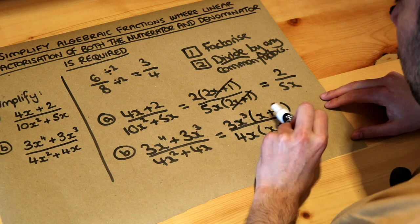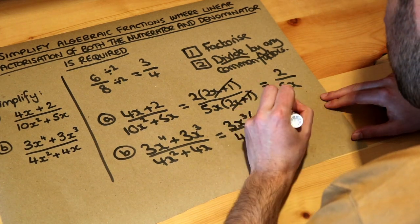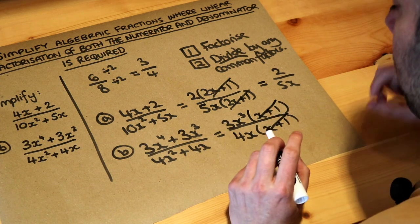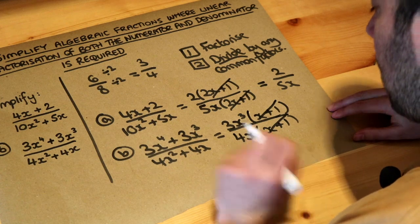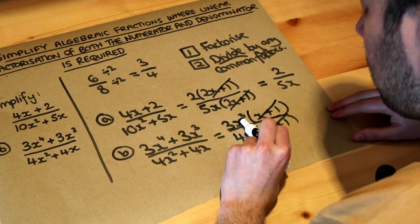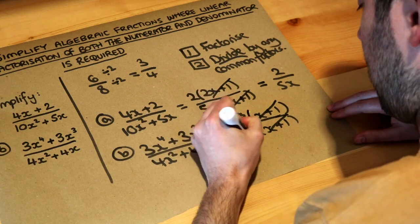And again we've got the x+1 common to the top and the bottom, so we can cross these out. Ah but there's slightly more that cancels as well. x³ and x have x in common, so I could divide the top and bottom by x.